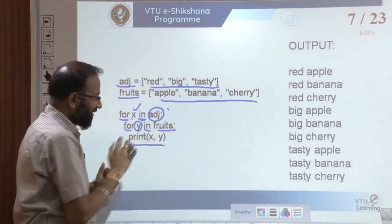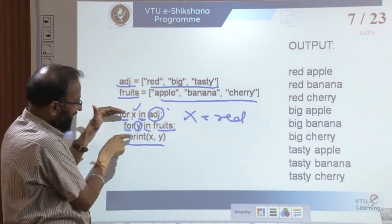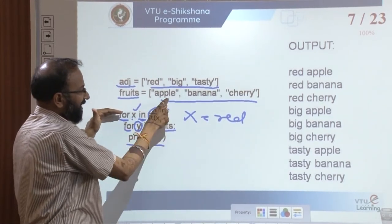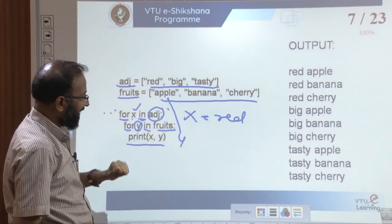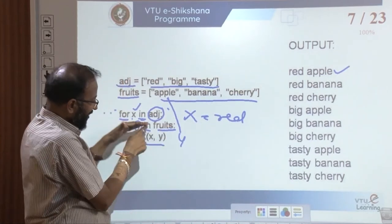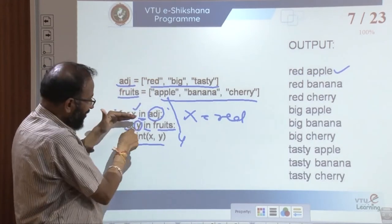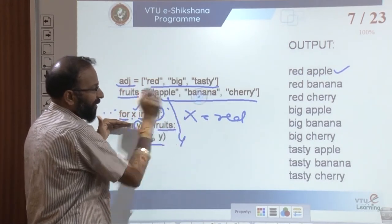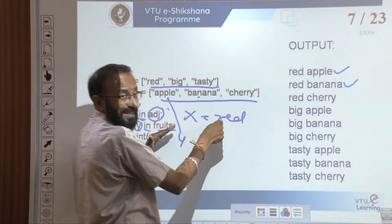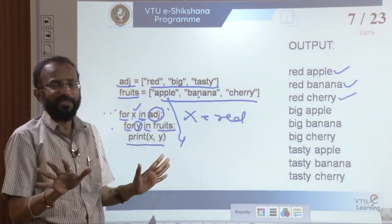When x = 'red', we run the inner loop for y in fruits. First time y = 'apple', so we print x, y: 'red apple'. Then inner loop increments: y = 'banana', print 'red banana'. Then y = 'cherry', print 'red cherry'. No more values in inner loop — it goes back to outer loop. x now points to 'big', inner loop restarts from first iteration: y = 'apple', print 'big apple', then 'big banana', 'big cherry'.